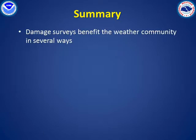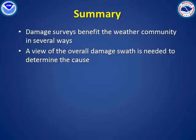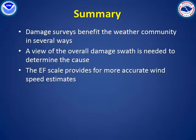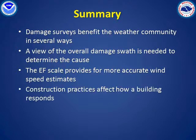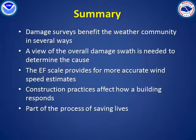Damage surveys provide valuable documentation of a storm and its impacts, and they provide important information about the people and structures impacted by a storm. If no video or photo images are available, studying the entire damage area is necessary to determine the cause of an event. The enhanced Fujita or EF scale provides a more quantitative and more accurate means of estimating maximum wind gust speeds. Construction practices will affect, sometimes dramatically, how a building responds in high winds. All of the information gathered in damage surveys is catalogued, shared, and hopefully used to save lives and property in the future.